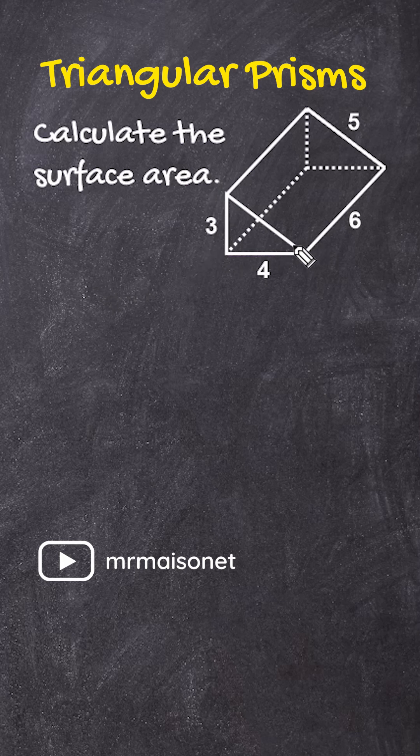For any right triangular prism, we should understand that the two right triangles, if you stick them together, would form a single rectangle.